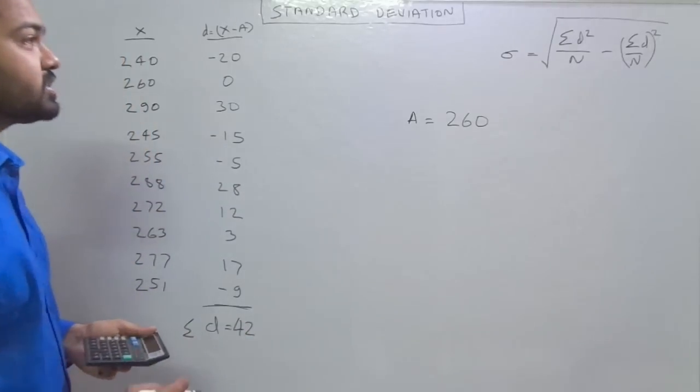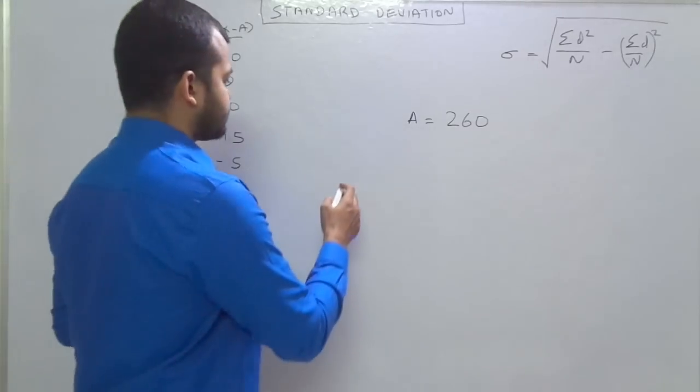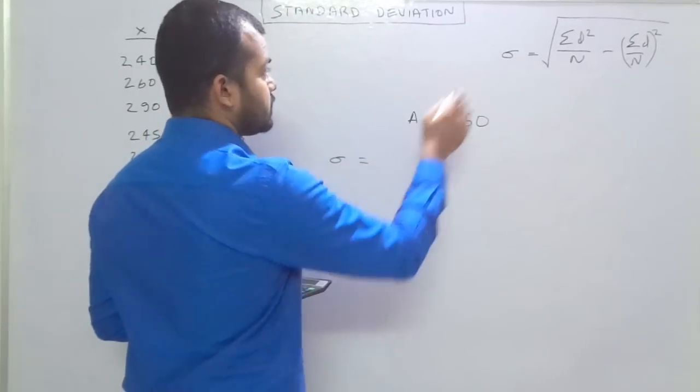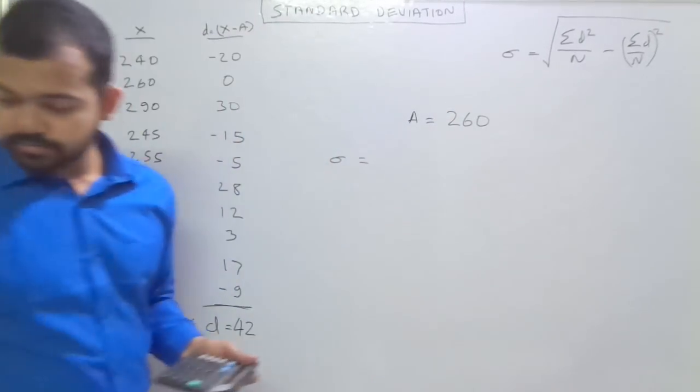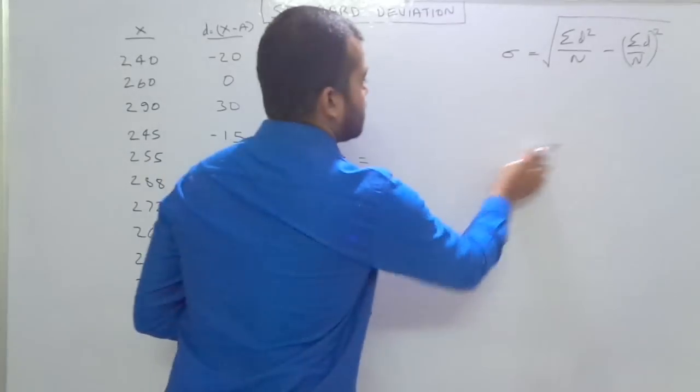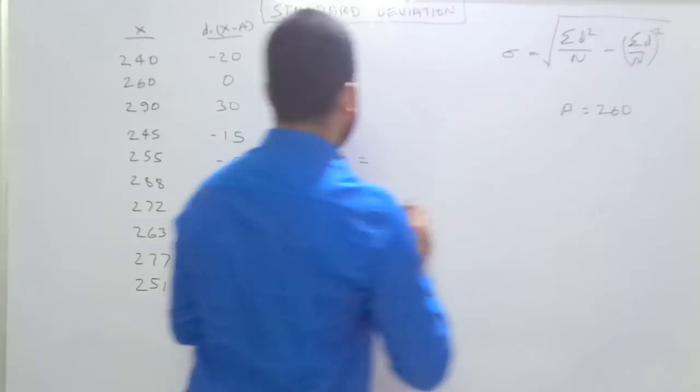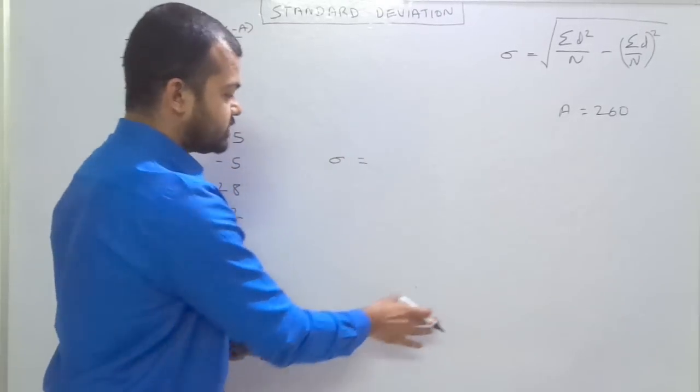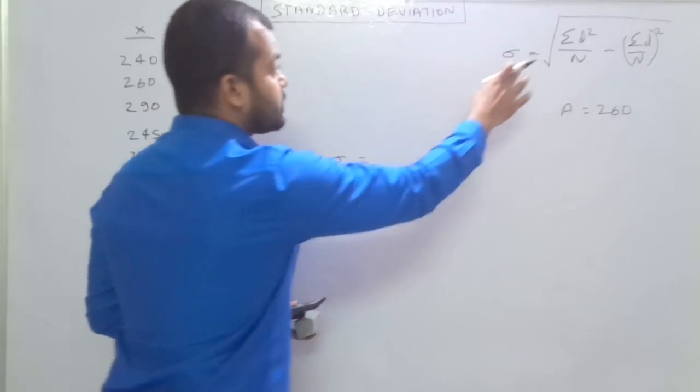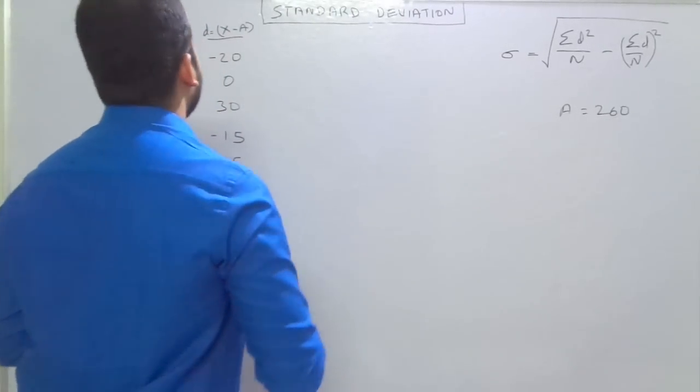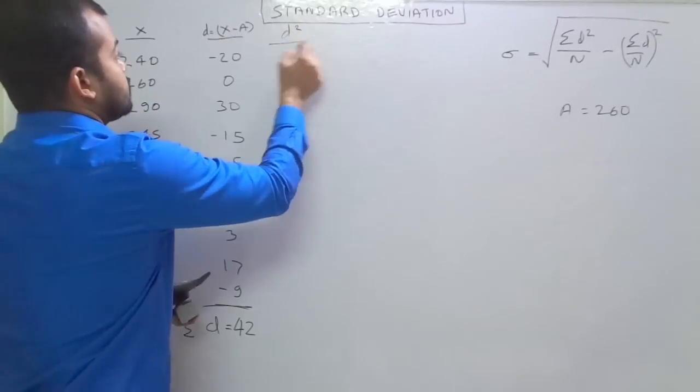Now we just have to put these values into the formula. That is summation D square. Here I can write here A is equals to 260, so that I can use this space. Here summation D square. It means you have to calculate D square also. So D square.